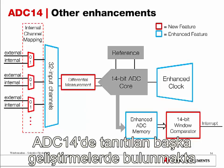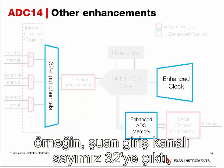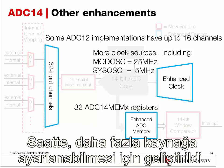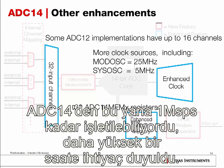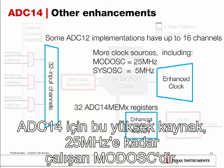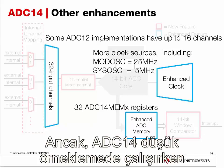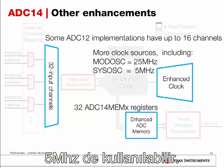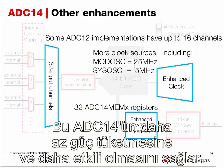There are additional enhancements in the ADC14. It now supports up to 32 input channels, a significant increase compared to some ADC12 implementations with only 16 channels. The clock is also enhanced to support more sources. Since the ADC14 operates at up to 1 MSPS, it requires a higher clock; the primary clock source is SMCLK, which can run up to 25 MHz. However, when running at lower sample rates such as 200 kilo samples per second, a slower source like MCLK at 5 MHz can be used, allowing the ADC14 to consume less power and operate more efficiently.